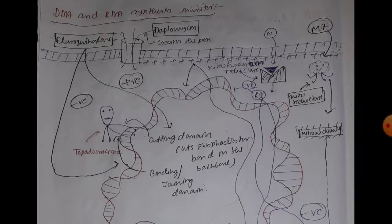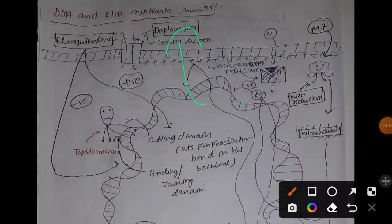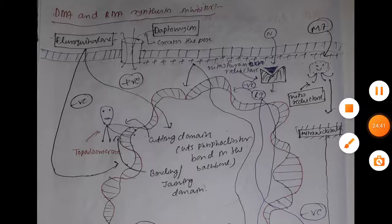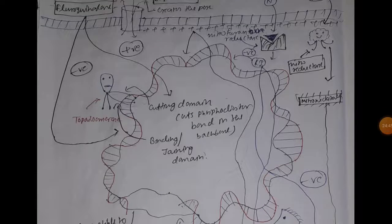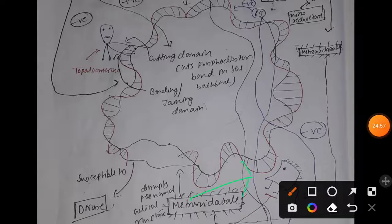Metronidazole is useful for both gram-positive and gram-negative bacteria, mainly for protozoal infections. Daptomycin creates pores causing depolarization, which inhibits DNA, RNA, and protein synthesis. Nitrofurantoin converts to a reactive intermediate inhibiting DNA, RNA, and protein synthesis. Rifampicin inhibits DNA-dependent RNA polymerase, preventing RNA synthesis.